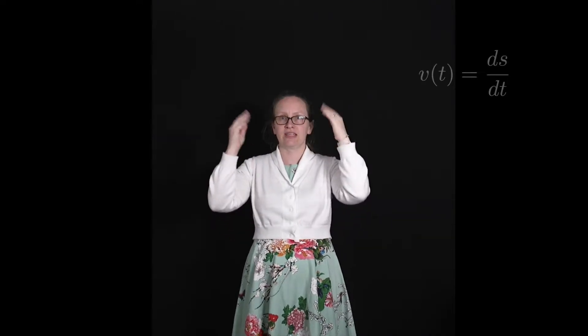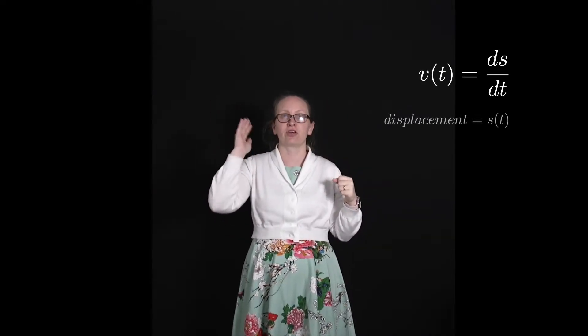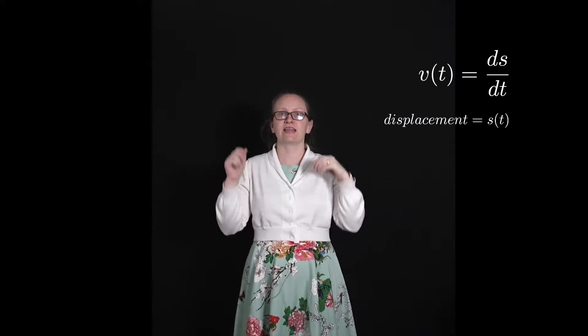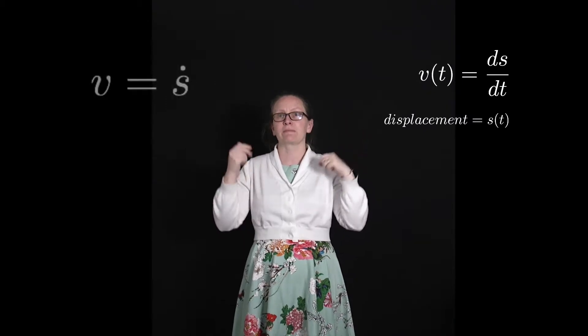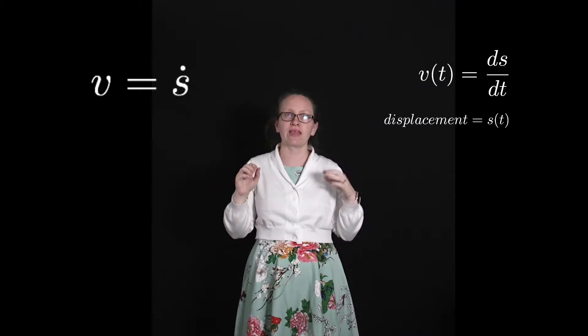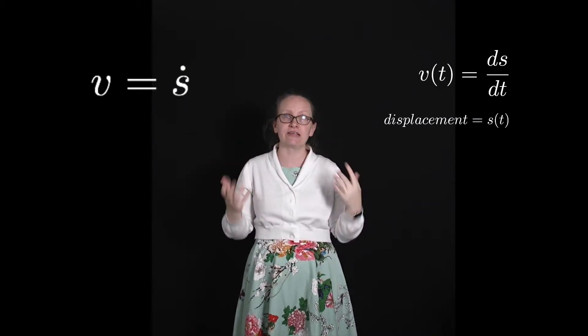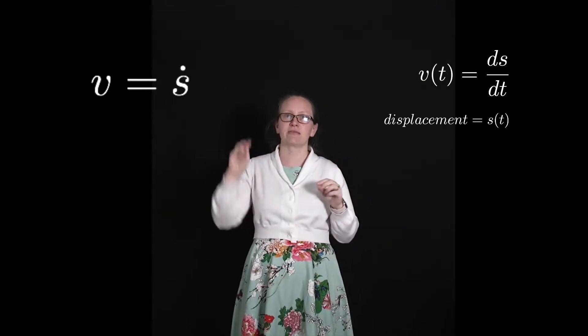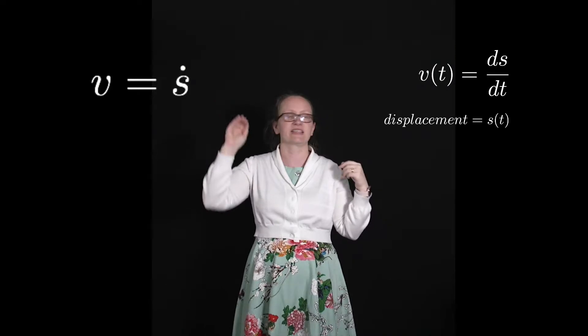As we've discussed, velocity is the change in displacement with time. So we can write the equation: velocity is equal to ds/dt, where s stands for displacement. Another way to write this is that velocity is equal to s-dot. When we put a dot over something, it indicates we're differentiating with respect to time, so the dot is the same as the d/dt part of ds/dt.